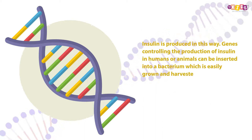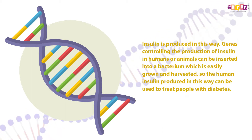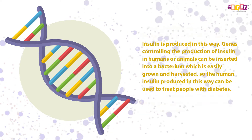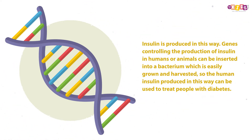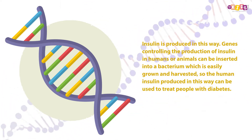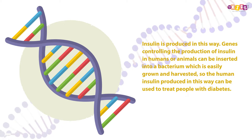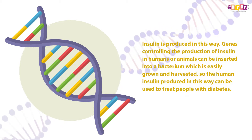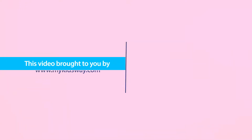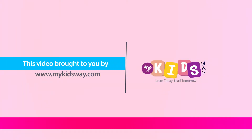Insulin is produced in this way. Genes controlling the production of insulin in humans or animals can be inserted into a bacterium which is easily grown and harvested, so the human insulin produced in this way can be used to treat people with diabetes.